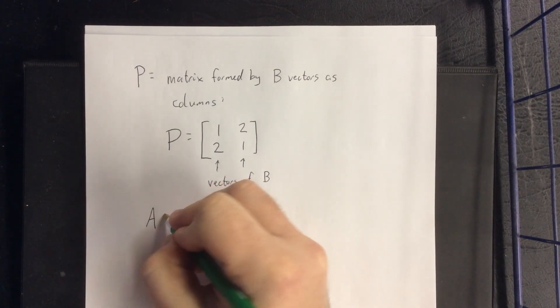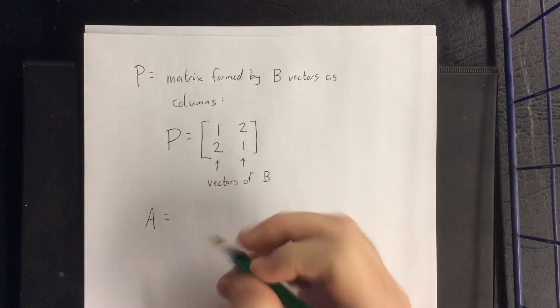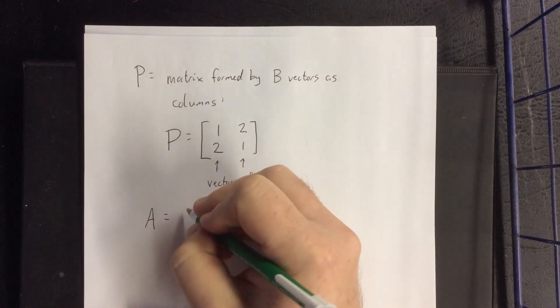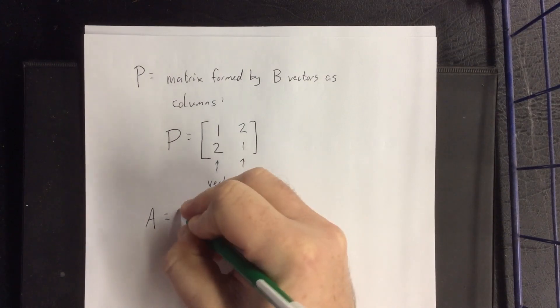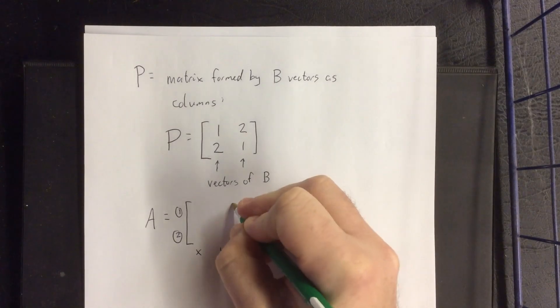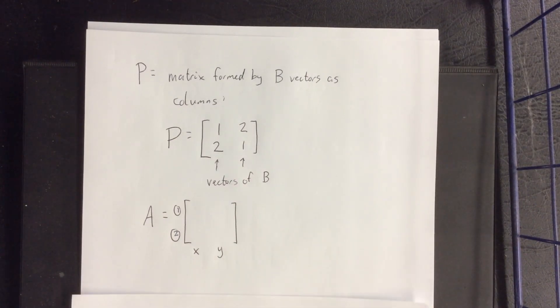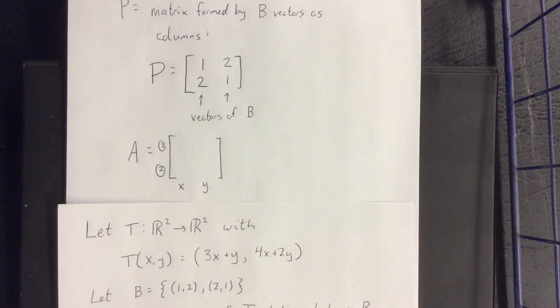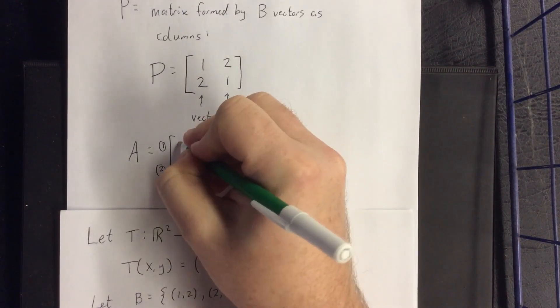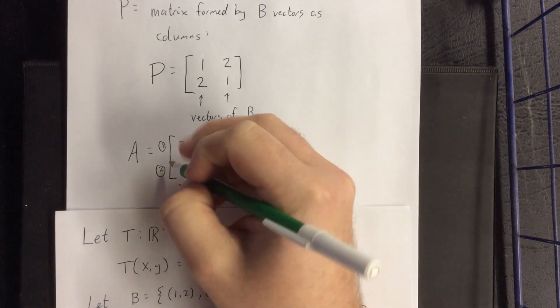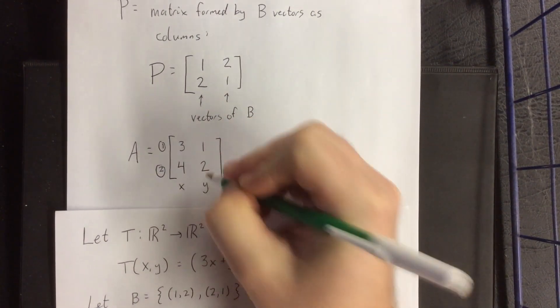Next to set up A, and that's going to come from our transformation itself. This will be the first component of the image, second component of the image, coefficient of x, and coefficient of y. So with that in mind, taking a look at our transformation T, the first component is supposed to be 3x+y, and the second component is 4x+2y. So A is the matrix [3,1; 4,2].